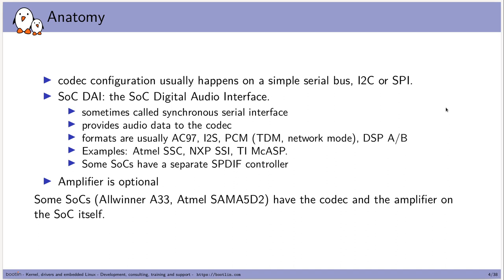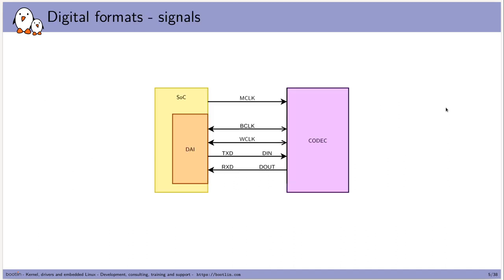The amplifier is totally optional — you can have line in or line out connections. Some SoCs like the Atmel SAMA5D2 will have the codec and the amplifier directly on the SoC, typically a class D amplifier. The signals for the DAI include two different clocks: BCLK (the bit clock) and WCLK (the frame sync clock), and then one or multiple data connections that will be TX and RX, or for the codec, data in and data out.